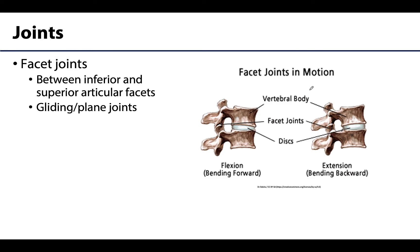Speaking of facet joints, there are many of them throughout the movable vertebral column, between neighboring inferior and superior articular facets. You can see them at multiple levels here — pretty much the whole way down the vertebral column — and they allow slight gliding movements.